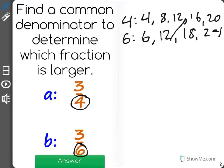As you can see, I have a common denominator of 12. Now, I need to find an equivalent fraction for each of these. So 3 out of 4, or 3 fourths, equals blank over 12.